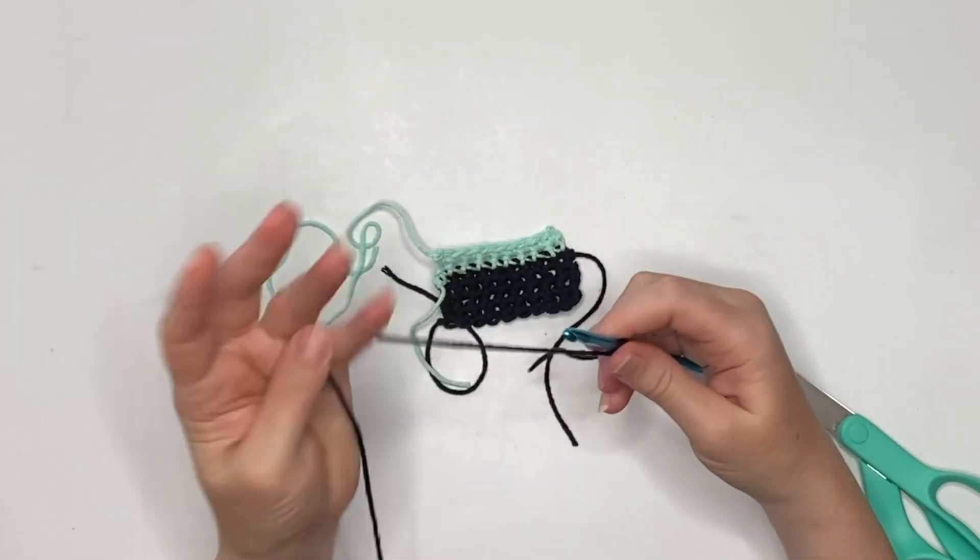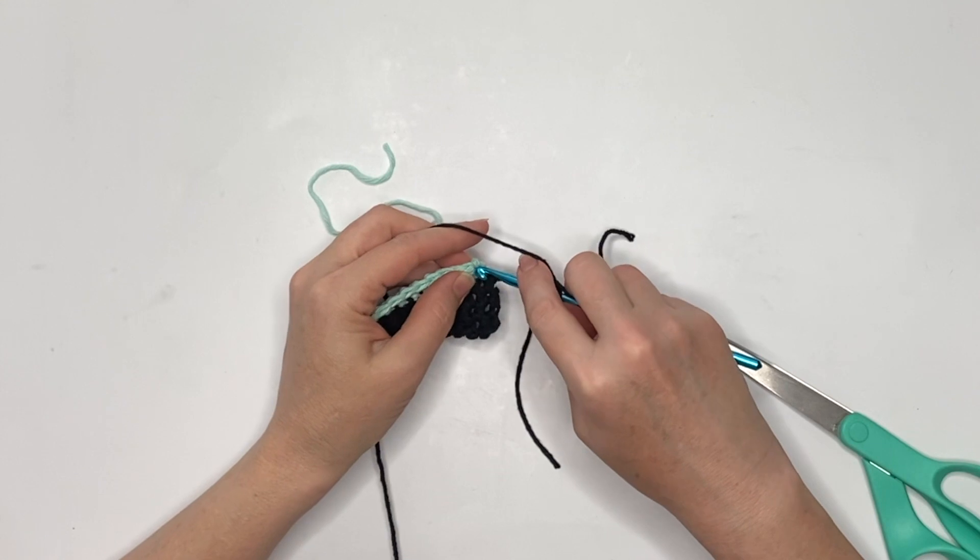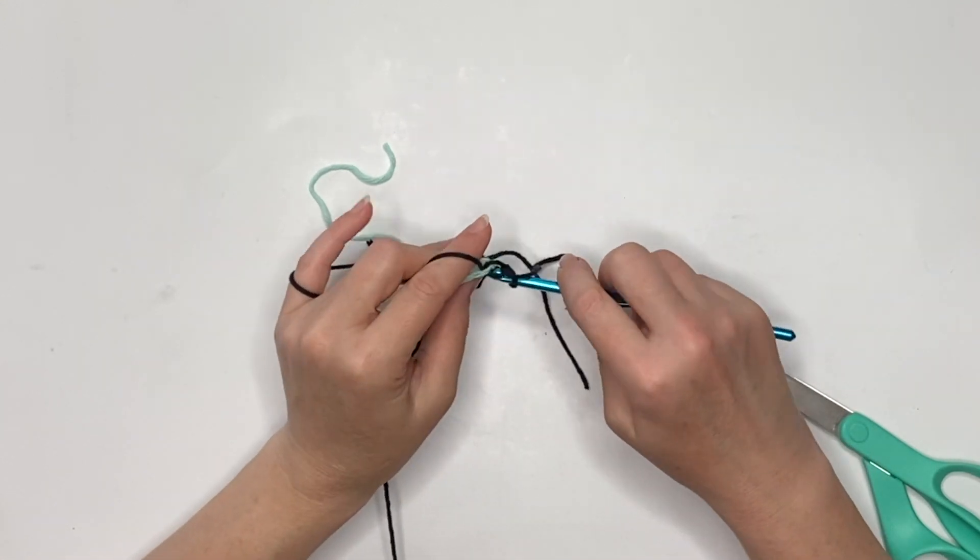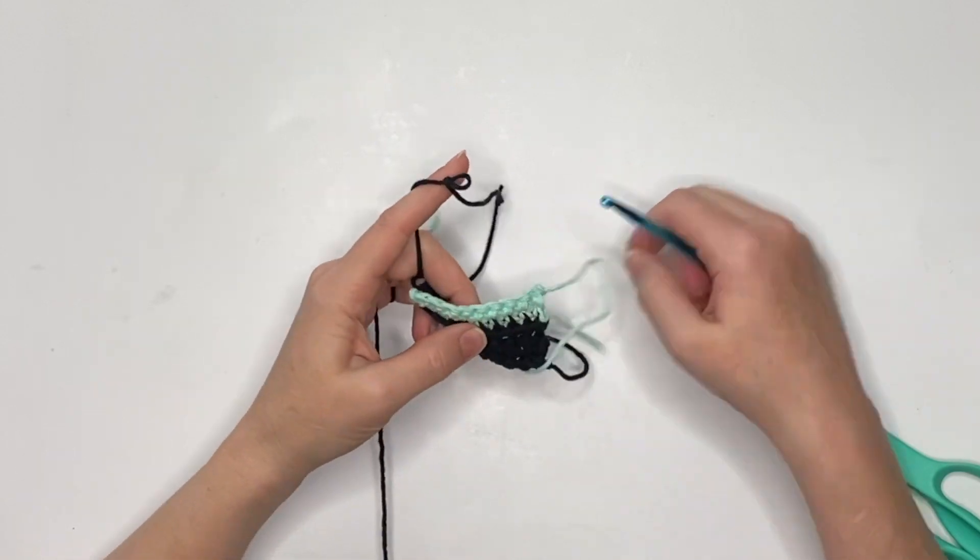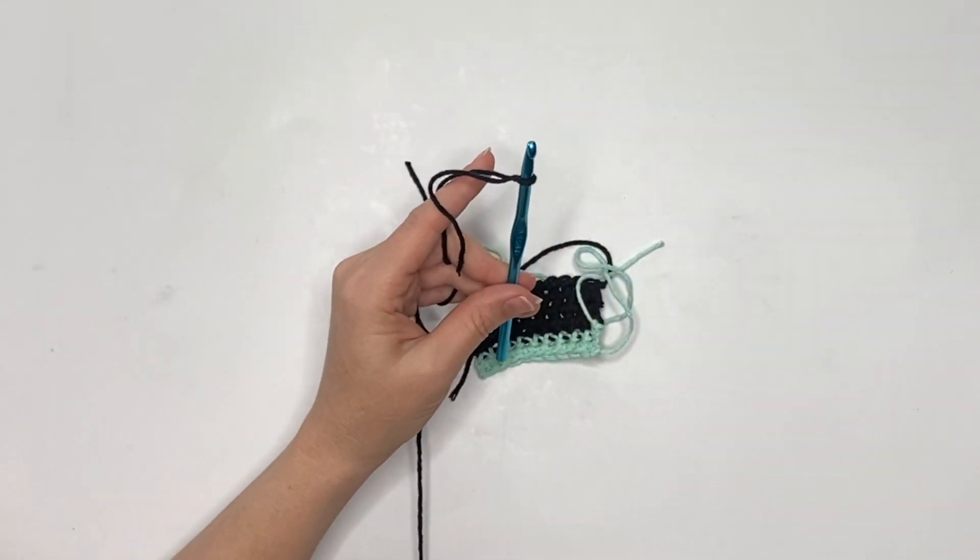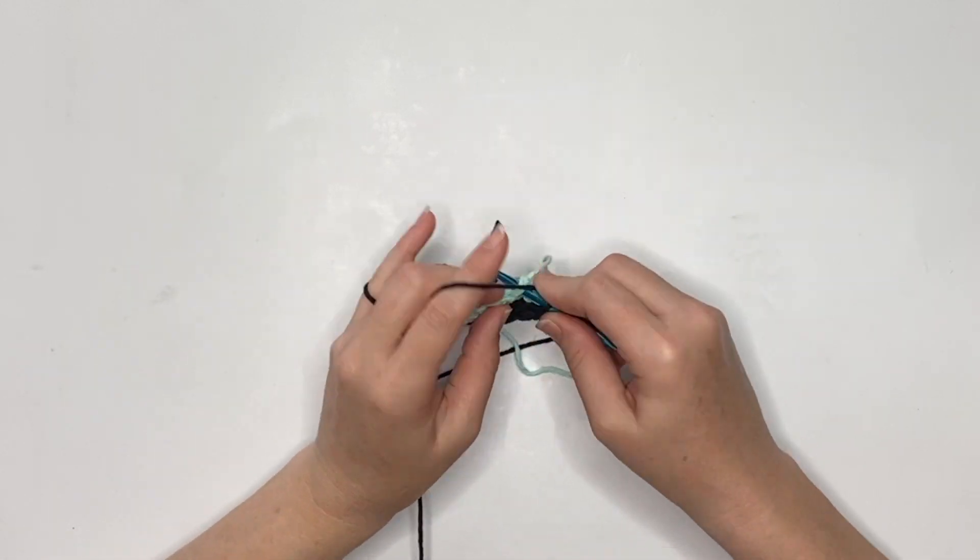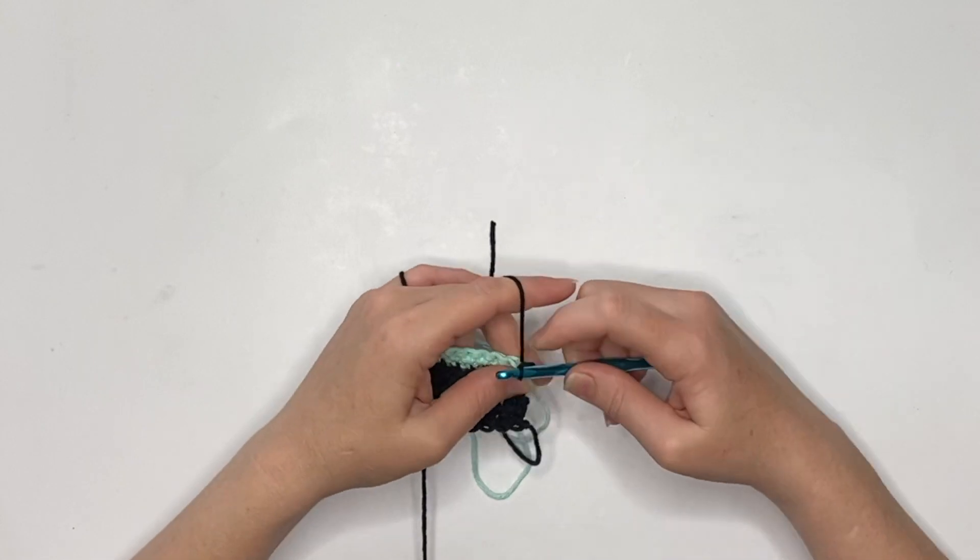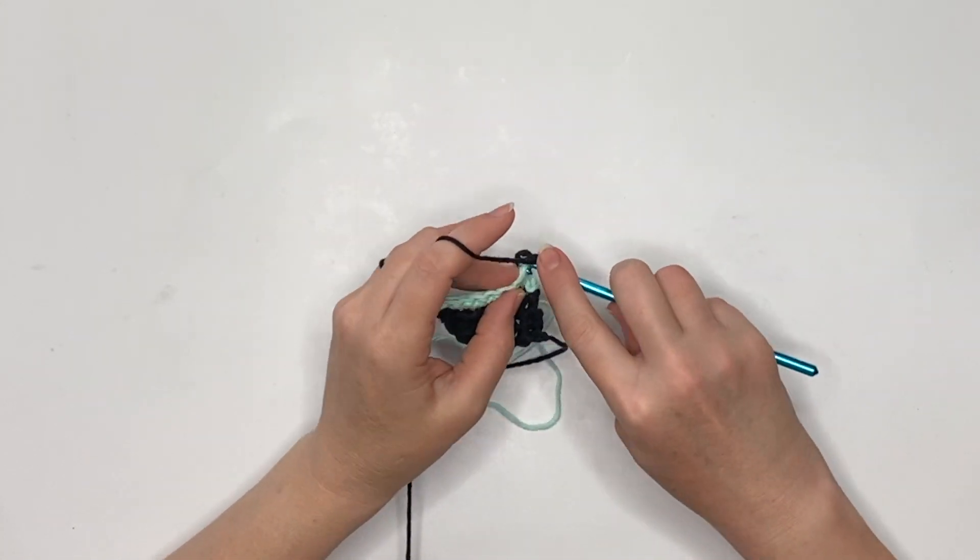Now it's time to change to color A again, going back to that black. We're going to cast on and then chain one and single crochet two.